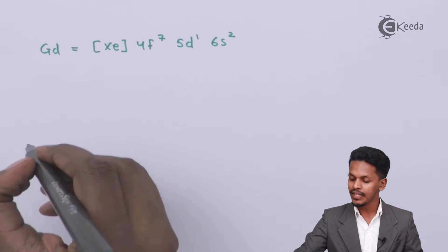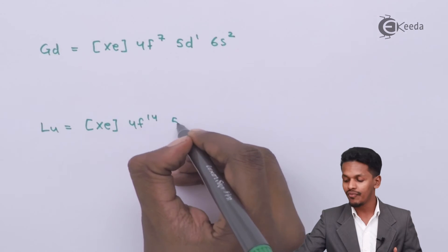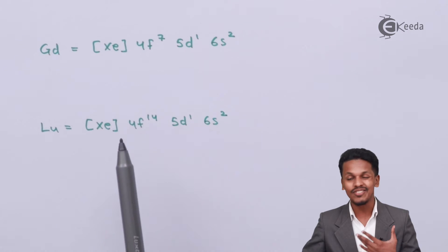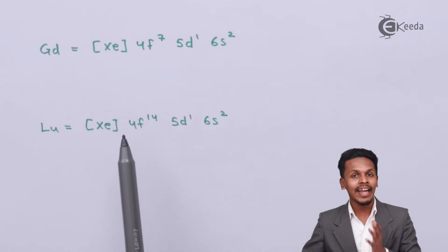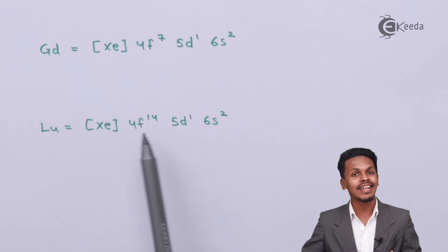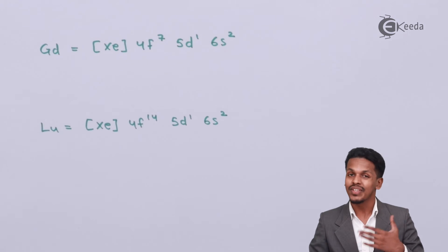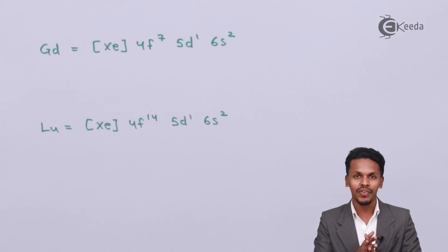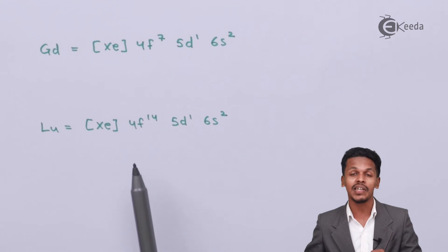Similarly for lutetium, the electronic configuration is [Xe] 4f¹⁴ 5d¹ 6s². In this case the last electron does not enter the f orbital because it is already completely filled with 14 electrons, and so the electron is shifted to the 5d orbital. It is still called an f-block element, but as discussed in the previous lecture, not every d-block element is a transition element, and similarly not every f-block element is an inner transition element. These are the different electronic configurations compared to the other elements in the lanthanoid series.